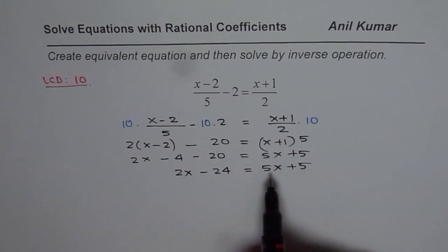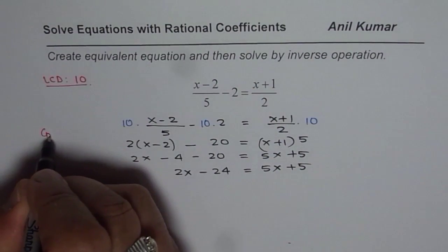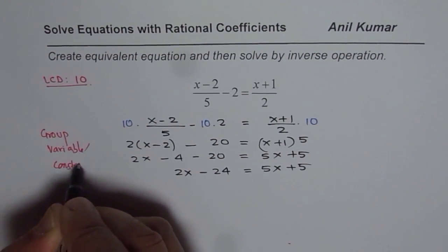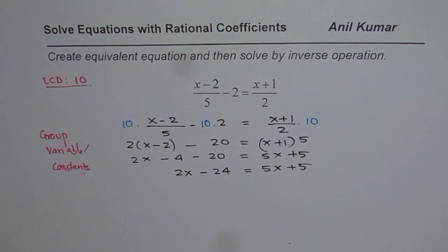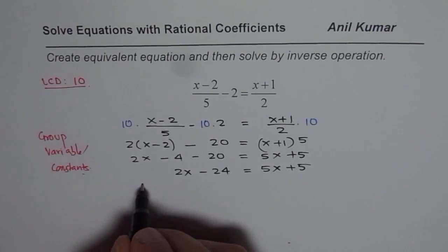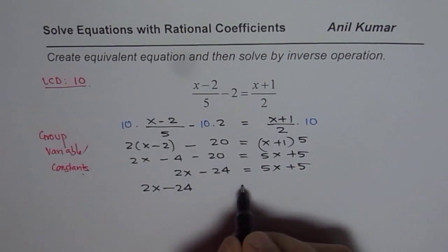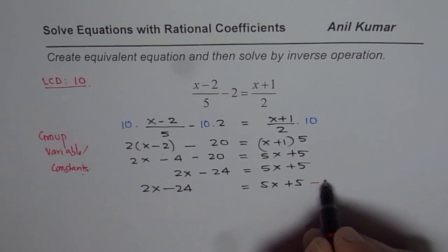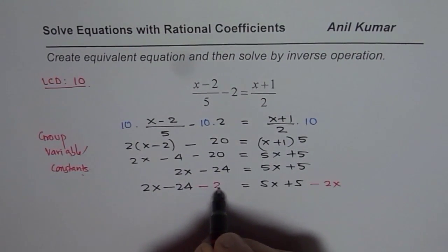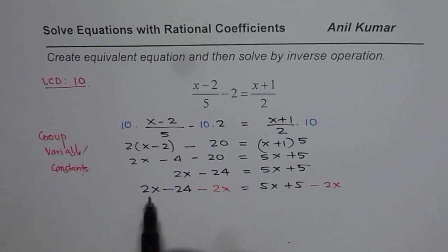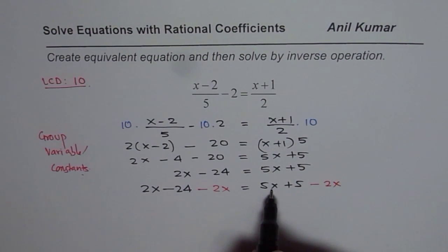At this stage you need to group the variables. We need to group both variables on one side and the constants on the other. To group variables, we can take away 2x from both sides, giving minus 24 equals 5x plus 5. I am collecting the variables on the right side this time, since 5x is greater than 2x, so I am avoiding a negative coefficient for the variable.